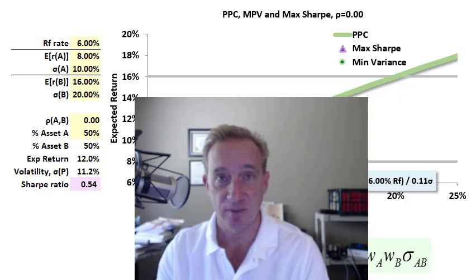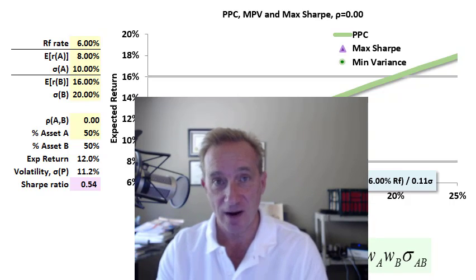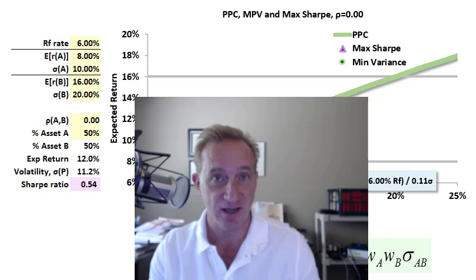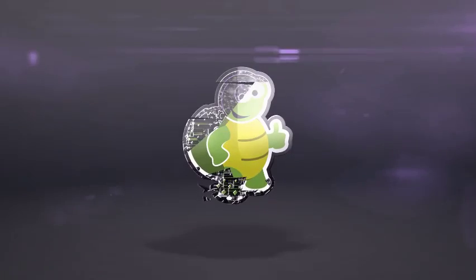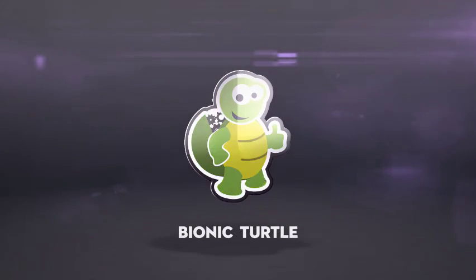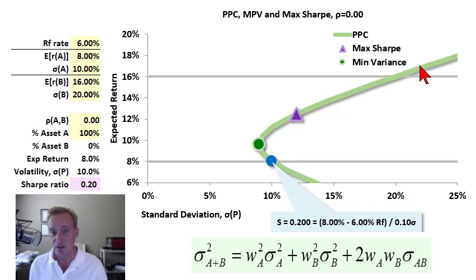The portfolio possibilities curve illustrates why there is a benefit to diversification when assets are imperfectly correlated. In order to illustrate the portfolio possibilities curve, which I have plotted here in green, I need a few assumptions.